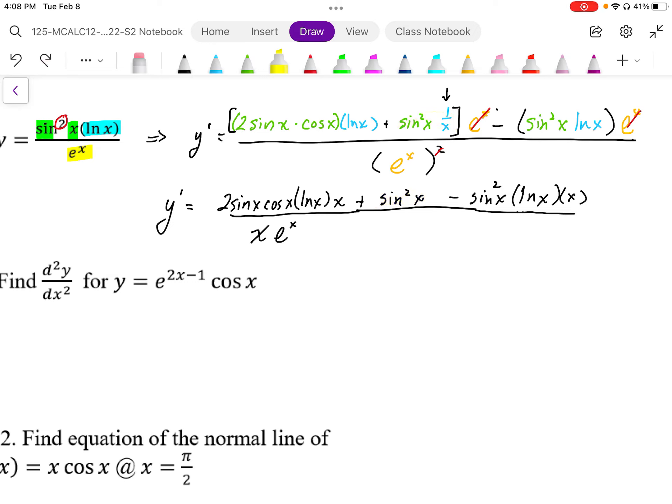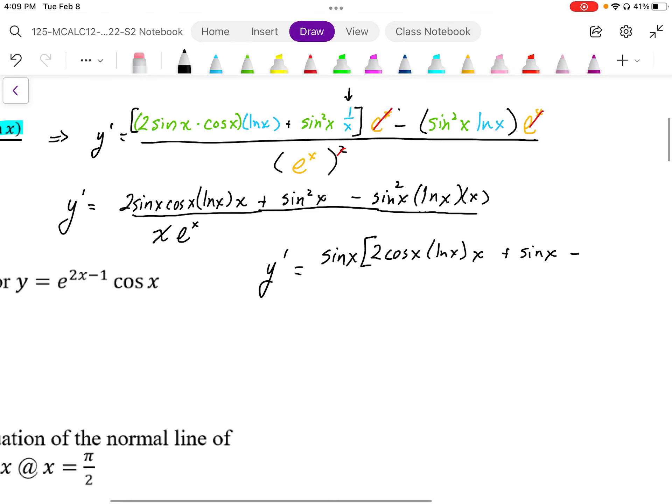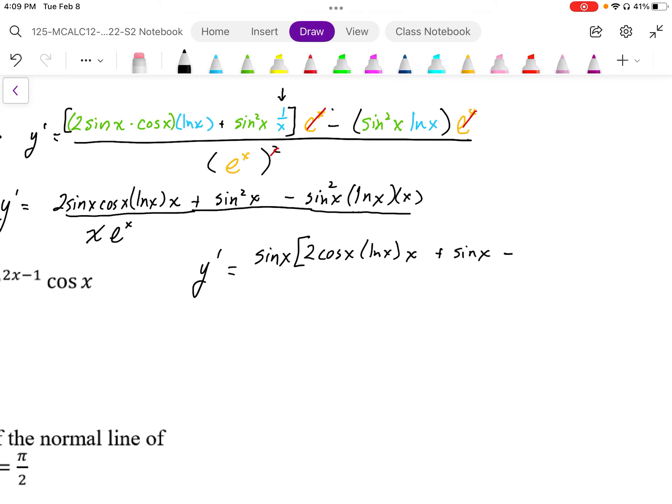Okay, so one last thing we probably should do is we probably should factor out the sine x, because that represents a factor for solving for zeros. That factor is very useful to have. So we're going to have y prime is equal to sine x. This leaves me with 2 cos x log x times x plus a sine x minus a sine x log x and an x factor here.